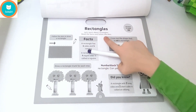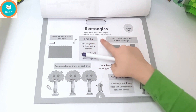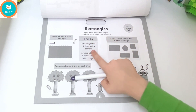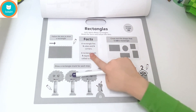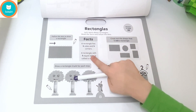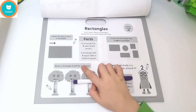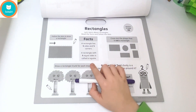Rectangles! Let's learn about rectangles. Read the facts and follow the dots. Facts: a rectangle has four sides and four corners. A rectangle with four equal sides is called a square.